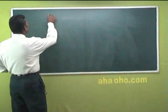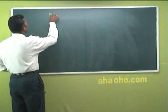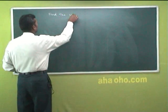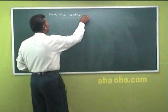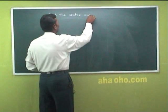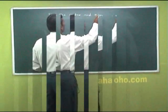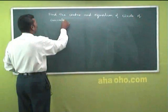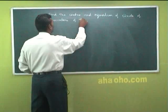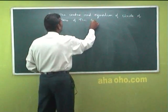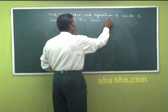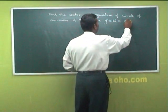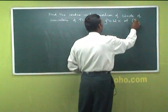Now find the center and equation of the circle of curvature of the curve y² = 12x at the point (3, 4).